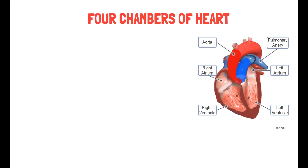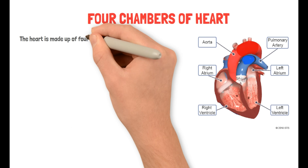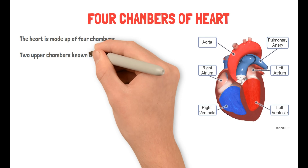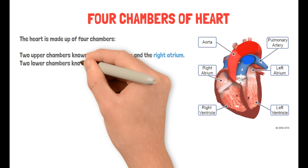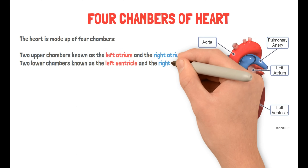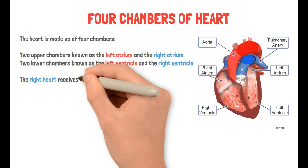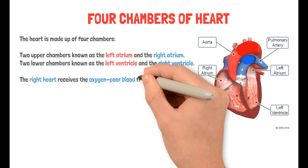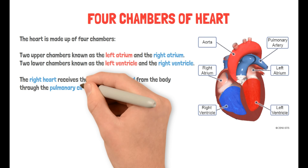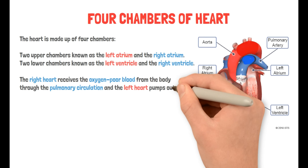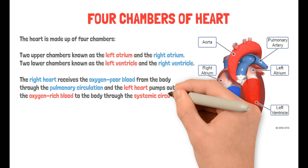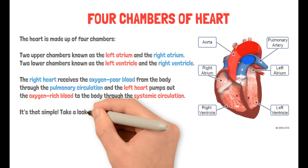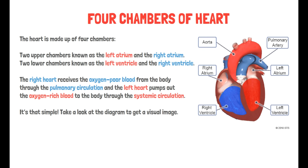Now that we're done with the cardiac muscle, it's time for the four chambers of the heart. We have an animation on the right for your visual understanding. The heart is made up of four chambers: two upper chambers known as the left atrium and the right atrium, and two lower chambers known as the left ventricle and the right ventricle. The right heart receives oxygen-poor blood from the body through the pulmonary circulation, and the left heart pumps out oxygen-rich blood to the body through the systemic circulation. Now take a look at the diagram again to get a better understanding.